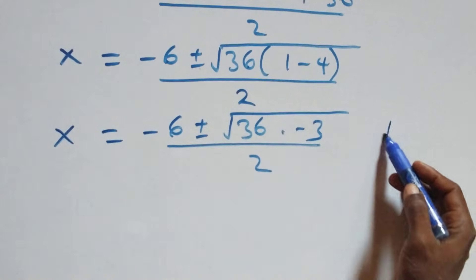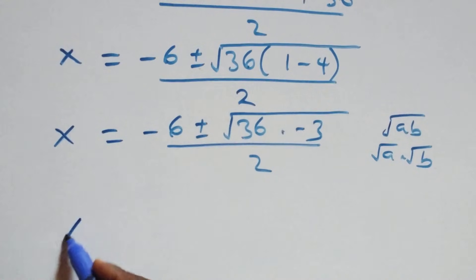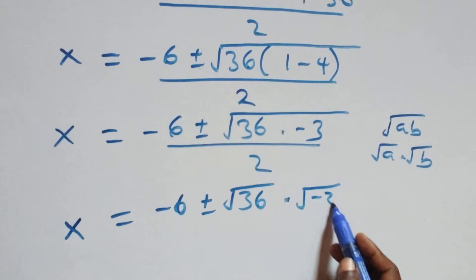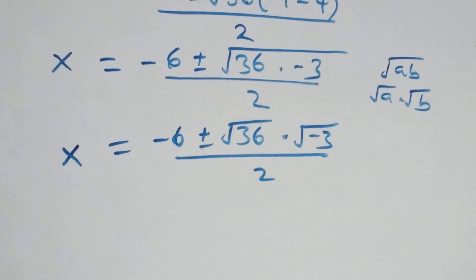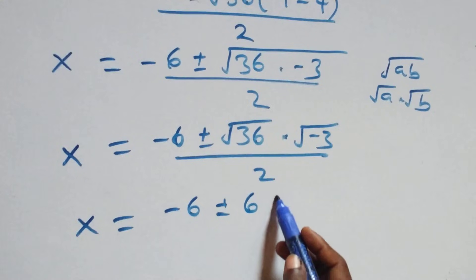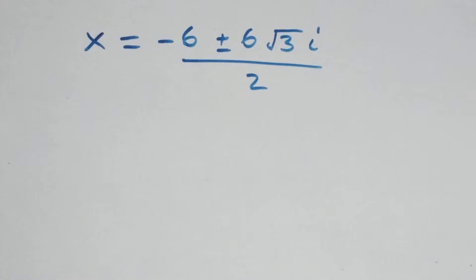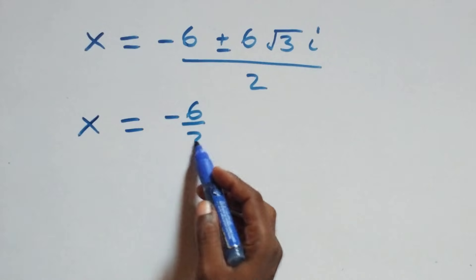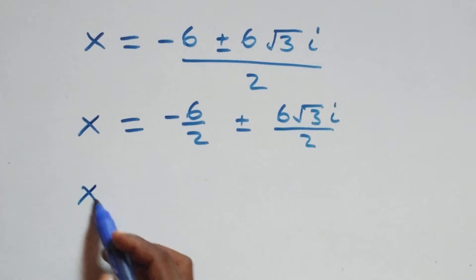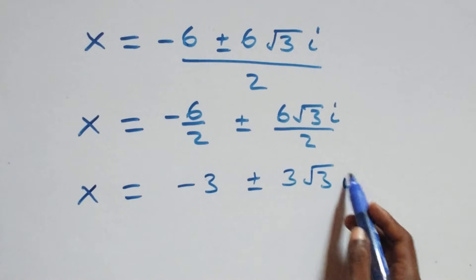Using the property that root of a times b equals root a times root b, we separate: x equals minus 6 plus or minus square root of 36 times square root of negative 3, which is the same as root 3i. This gives x equals minus 6 over 2 plus or minus 6 root 3i over 2, simplifying to x equals minus 3 plus or minus 3 root 3i.